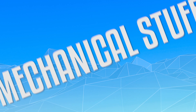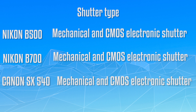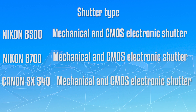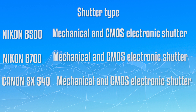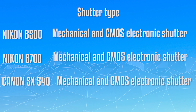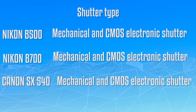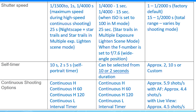Talking about some mechanical things like the shutter type, you are getting a mechanical CMOS electronic shutter with the Nikon B500, and also the same mechanical CMOS electronic shutter with the Nikon B700 and the Canon SX 540. More details on shutter speed, self-timer, and continuous shooting options are listed on screen.